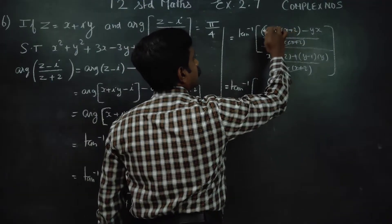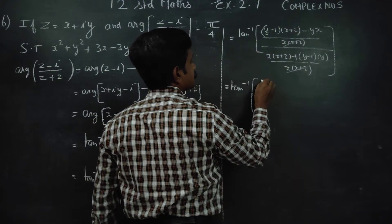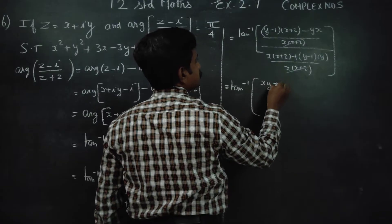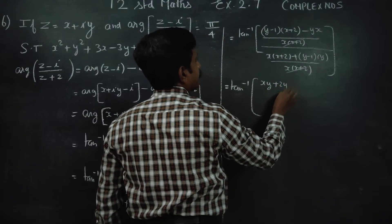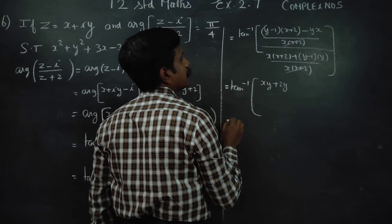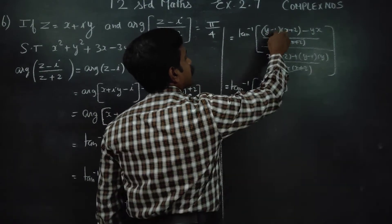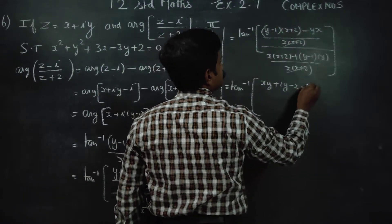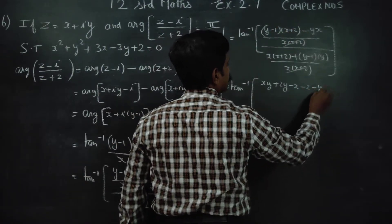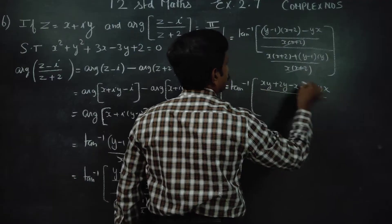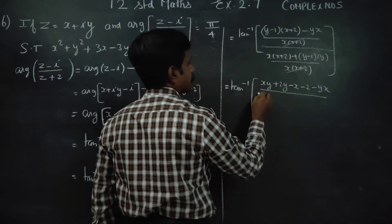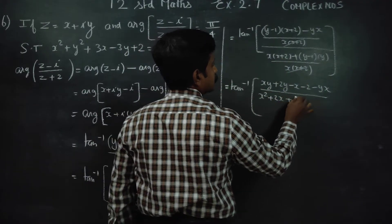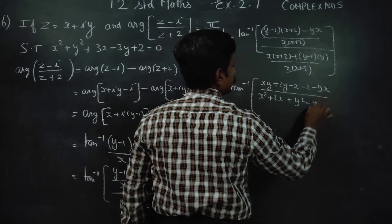After cancellation, we get tan inverse of [y(x plus 2) minus y minus x] divided by [x squared plus 2x plus y squared minus y].